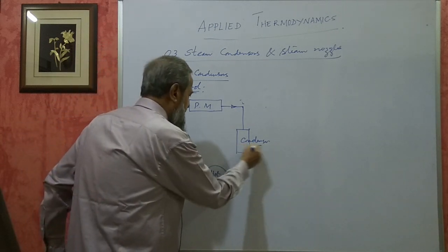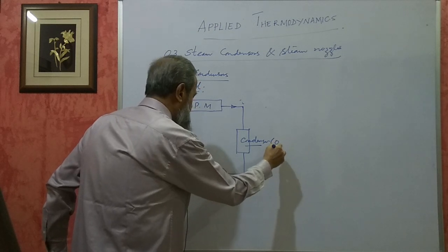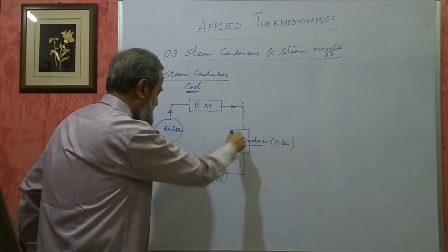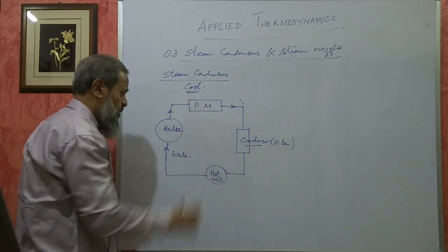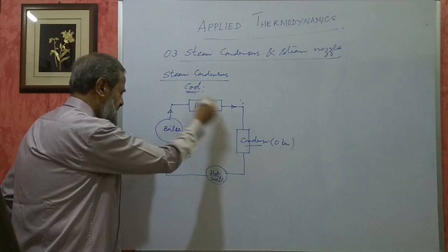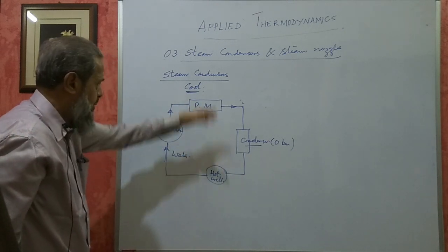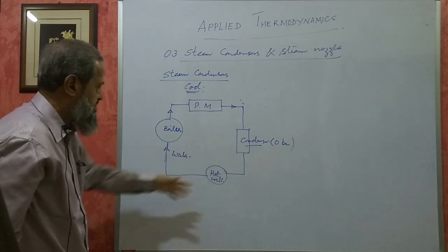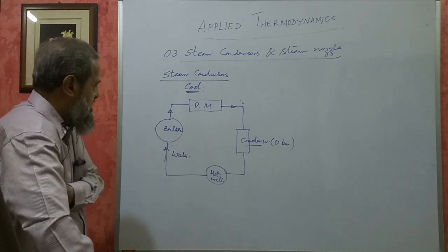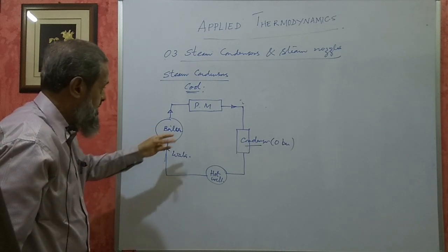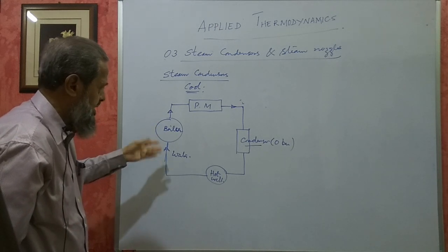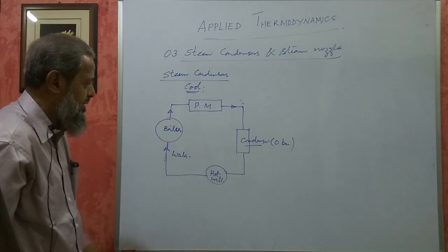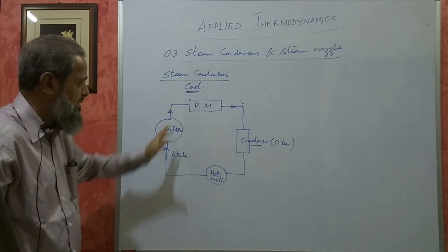Because the condenser is almost at 0 bar absolute pressure, very close to 0, you can discharge the steam into it at a very low pressure - that means you can get more work. That is one of the advantages. The overall efficiency of the plant will increase. The boiler will not get corroded since the same water is being used. Corrosion will be less and there will be no need for a feed water treatment plant. The same water keeps getting circulated.